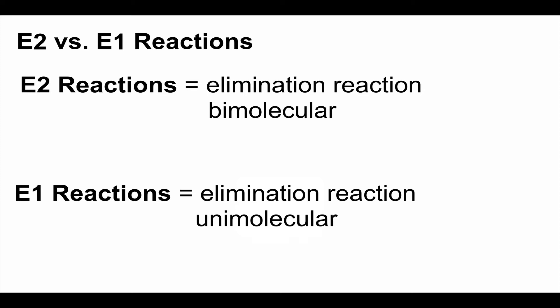A lot of the hallmarks of E2 are the same as SN2, and a lot of the hallmarks of E1 are the same as SN1. The good question is, what's the difference? How do you know whether you're doing elimination or substitution? One of the big things to look out for is the temperature of the reaction — temperature helps determine whether the reaction is under elimination or substitution conditions.